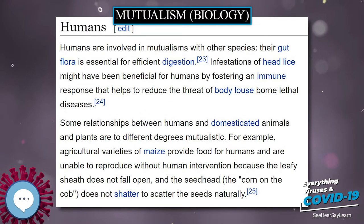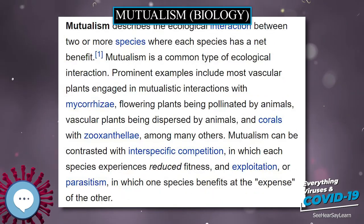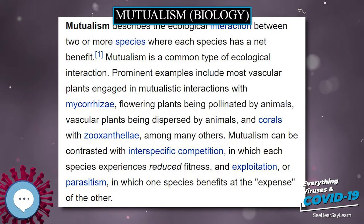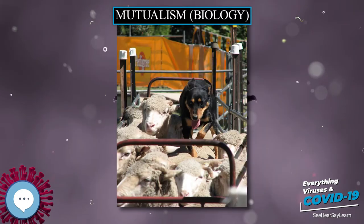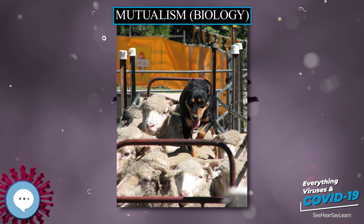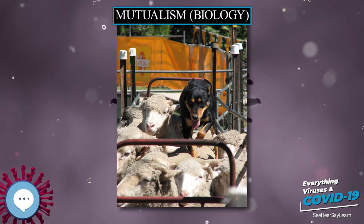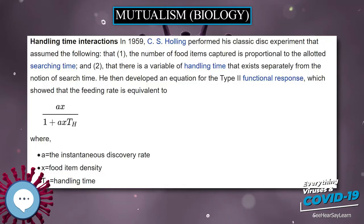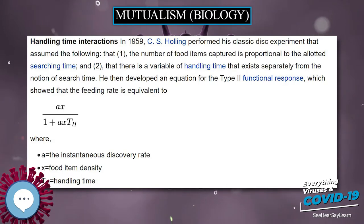Mutualism can be contrasted with interspecific competition, in which each species experiences reduced fitness, and exploitation, or parasitism, in which one species benefits at the expense of the other. Mutualism is often conflated with two other types of ecological phenomena: cooperation and symbiosis.